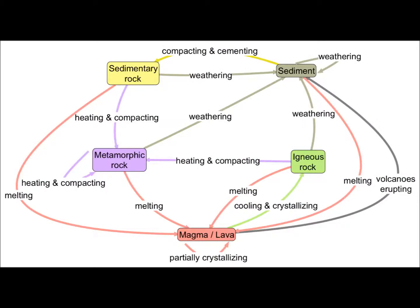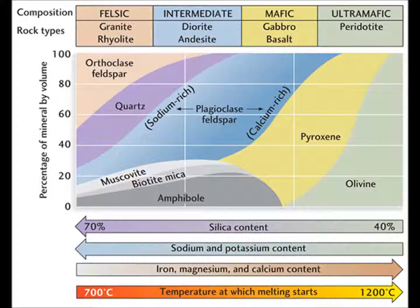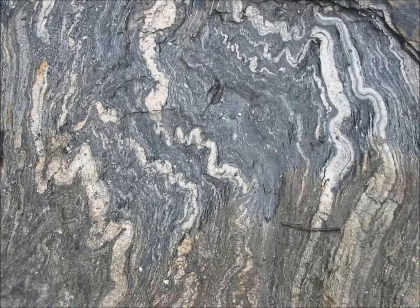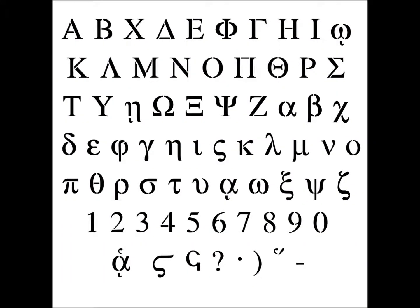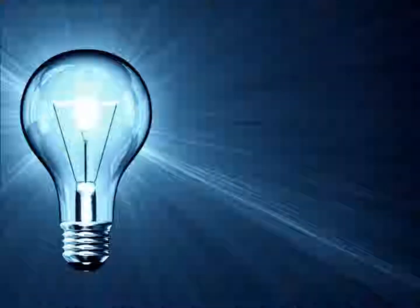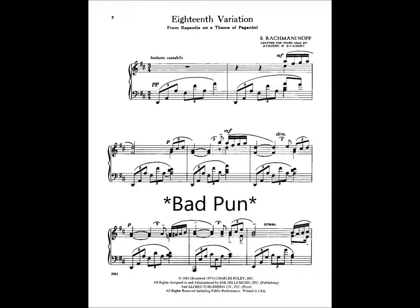An important rock-forming mineral, augite makes up many mafic and ultramafic igneous rocks and is a major constituent of gabbro and basalt. It is also found in high-temperature metamorphic rocks. Its name comes from a Greek word meaning brightness, in reference to a variation that has a shiny appearance.